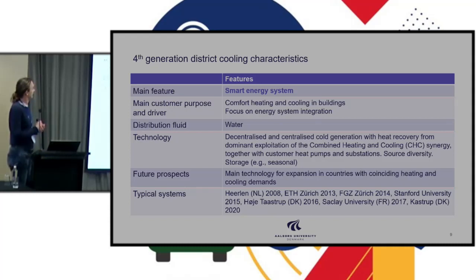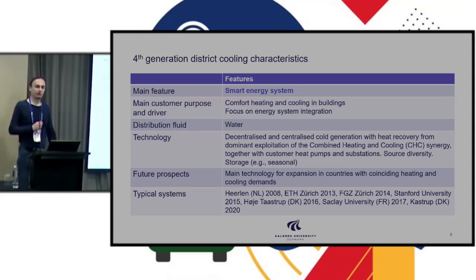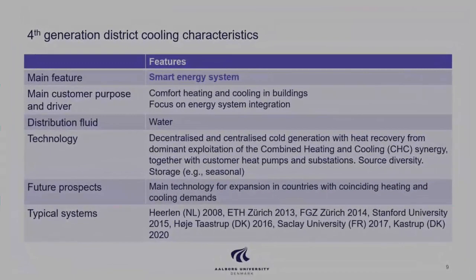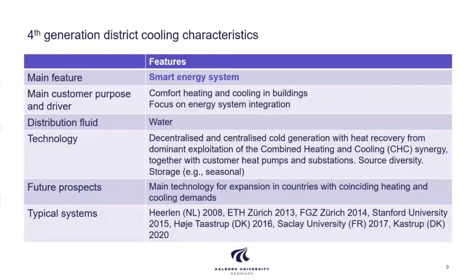Moving to fourth generation district cooling: here we are much more focused on integration with the rest of the energy system. There is a much stronger connection to district heating. When you have a chiller, you will also be producing heat, and if you are in a normally cold country you will have a potential use for that heat. There are Dutch systems, Swiss systems, Stanford, and Danish systems where, typically in colder climates, you can actually make use of the heating you will also be producing.